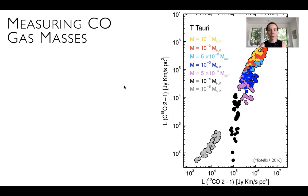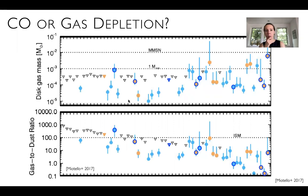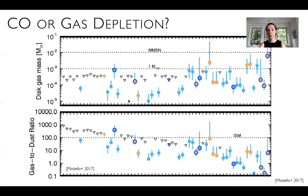But if you do this, you get something quite puzzling. First, you get total disk gas masses that are fairly low compared to what you'd expect from the solar system—often below one Jupiter mass. Second, you get a gas-to-dust ratio considerably lower than in the interstellar medium: instead of around 100, you often get 10 or even 1. There are processes that could explain this, like gas dispersal, but another option is that CO is not actually at 10⁻⁴ even in this intermediate layer, and there are theoretical reasons to suspect this.